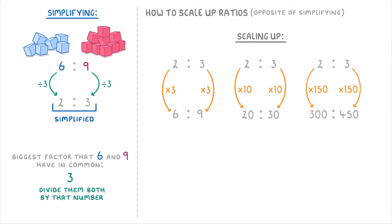The important thing to remember though in all these cases is that when you scale up or simplify like this, all the ratios that you get are equivalent. So 20 to 30, 2 to 3, 300 to 450, all of these ratios mean the same thing.